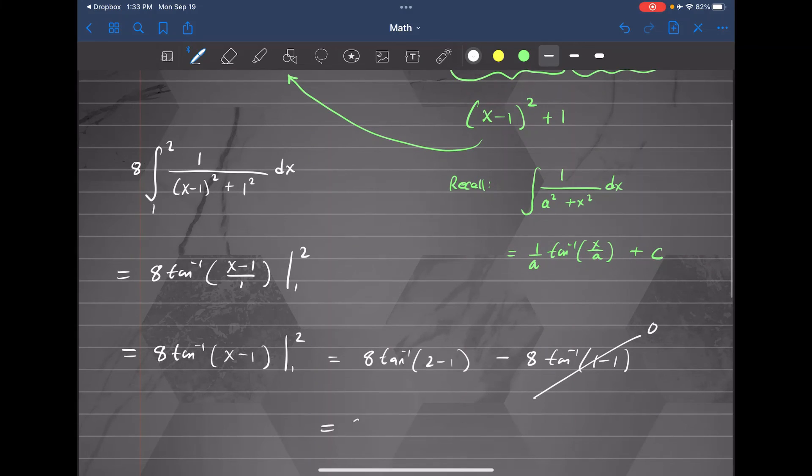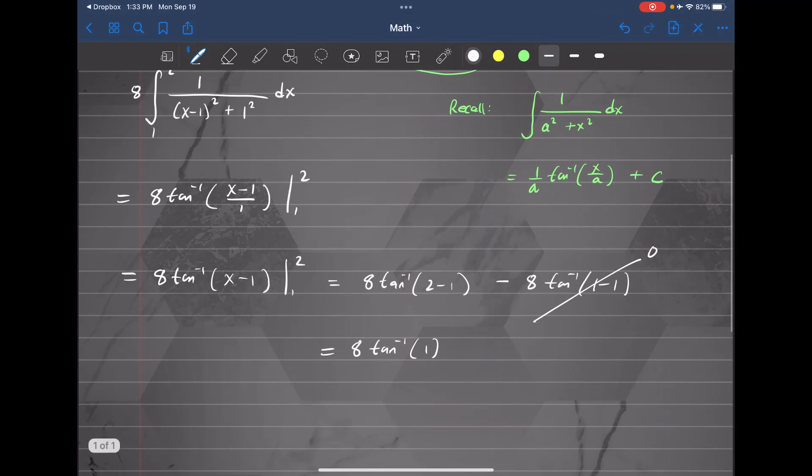So we only need to evaluate 8 times tangent inverse of 1. And we know that tangent inverse of 1, that is pi over 4. So that's your knowledge from pre-calculus. This is 8 times pi over 4, which will simplify to 2 pi. So this integral evaluates to 2 pi. I hope this makes sense. See you next time.